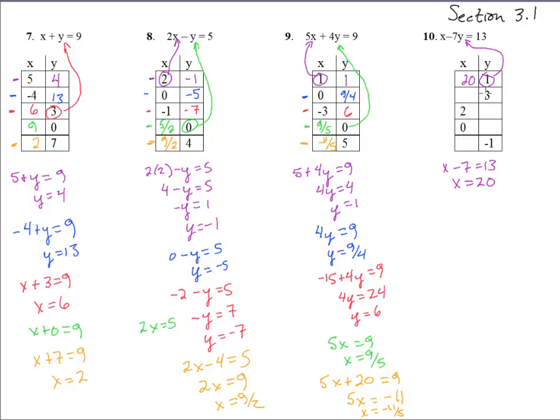Now if we stick in 3 for the next time. Stick in 3 for y and we get x minus 21 equals 13. Then we get, add 21 to both sides and we get x equals 34. That's good.